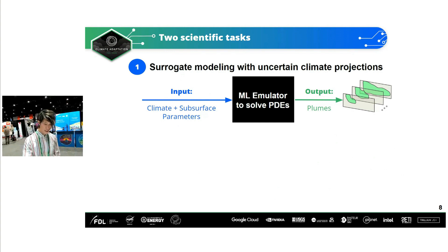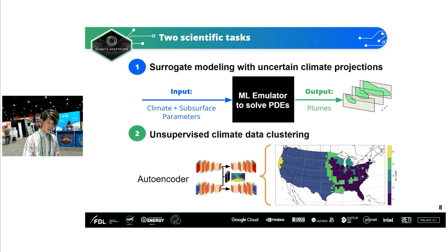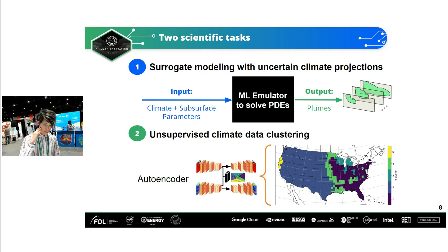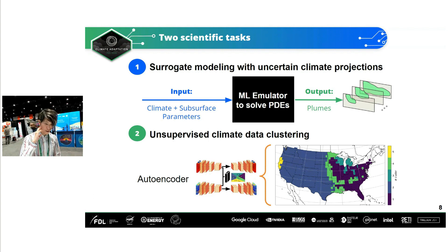Our multiscale digital twin has two scientific tasks. First, we want to train a surrogate model or emulator for groundwater simulation, which solves PDEs in groundwater flow. Second, in order to provide more realistic input data, we have a pipeline for unsupervised climate data clustering, where we use an autoencoder and apply clustering to identify unique climate regions.